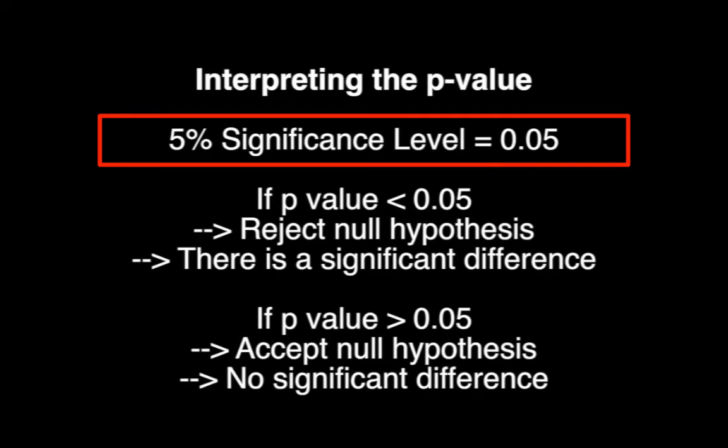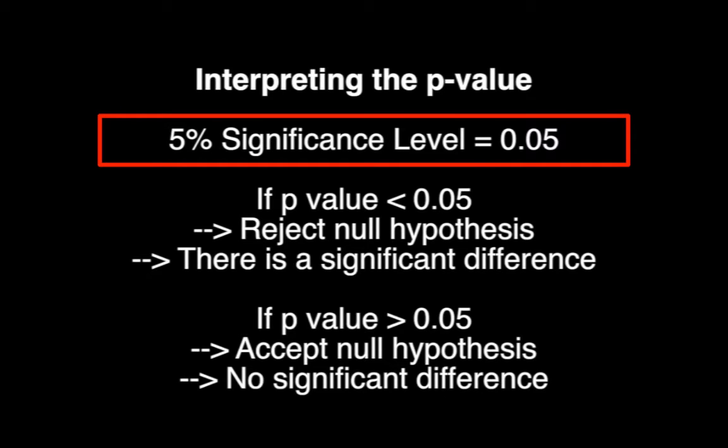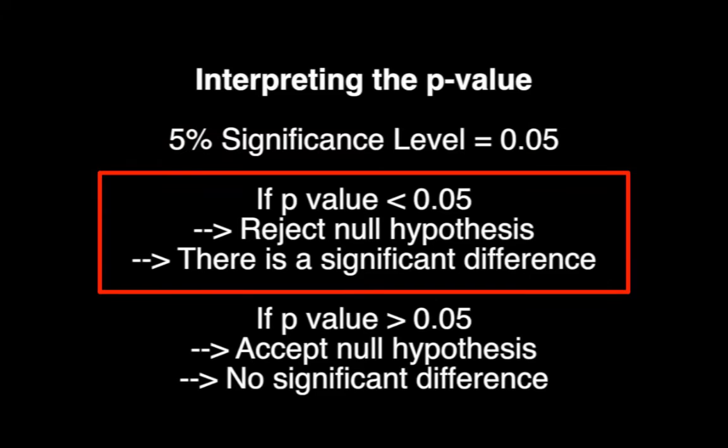In biology we tend to use the five percent significance level, which as a decimal is 0.05. If the p-value you receive is less than 0.05, then we reject the null hypothesis. Therefore there is a significant difference.